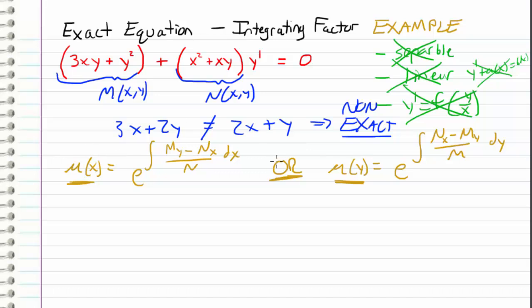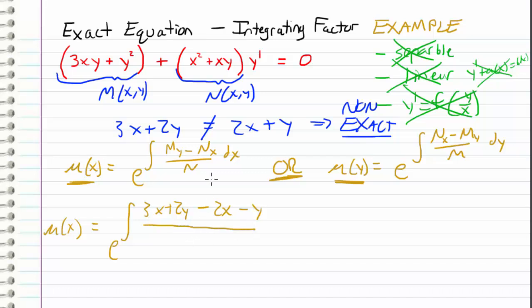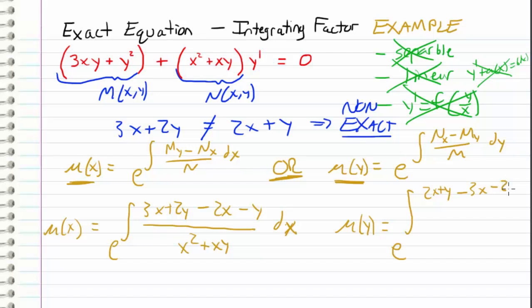When we substitute in for these two possible integrating factors, mu of x can be e to the integral of m_y — which we determined was 3x plus 2y — minus n_x, which is 2x plus y, distributing the minus sign, all over n, which is x squared plus xy, dx. Or we can choose our integrating factor to be a function of y, in which case it would be e to the integral of n_x, which is 2x plus y, minus m_y, which is 3x plus 2y, distributing the negative sign, all over m, which is 3xy plus y squared, dy.